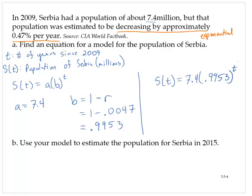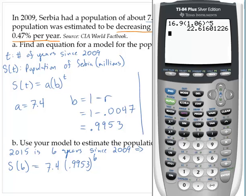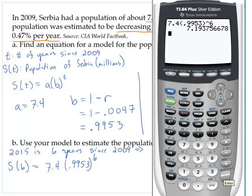Use your model to estimate the population for Serbia in 2015. 2015 is 6 years since 2009, and so that tells us that t is 6. Evaluating s of 6 would give us 7.4 times 0.9953 raised to the 6th power, which is about 7.19.